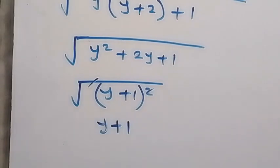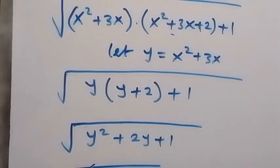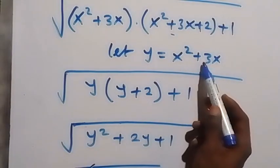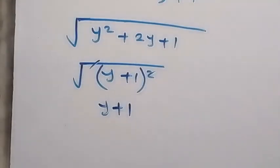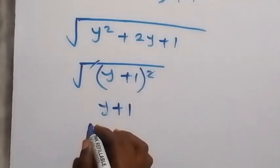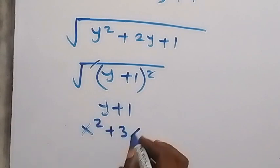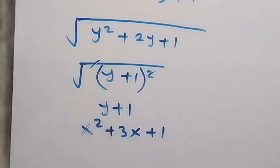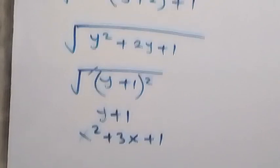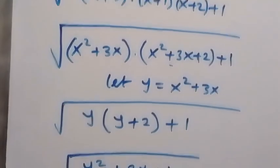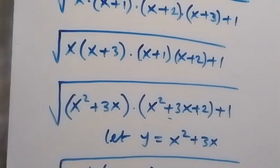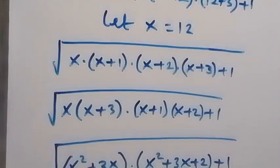From what we used to represent y, we say y equals x squared plus 3x, so we can write this again as x squared plus 3x plus 1. We represented x as 12, so let x equal 12. We bring x equals 12 and put it in here.